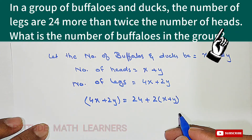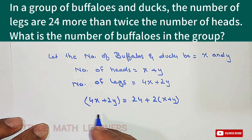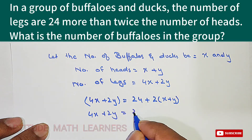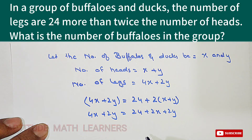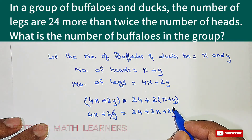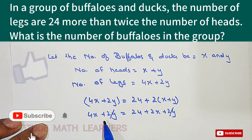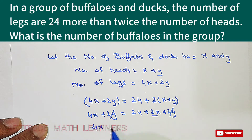Solving this equation: 4x plus 2y equals 24 plus 2x plus 2y. The 2y terms on both sides cancel each other out, leaving 4x minus 2x equals 24.